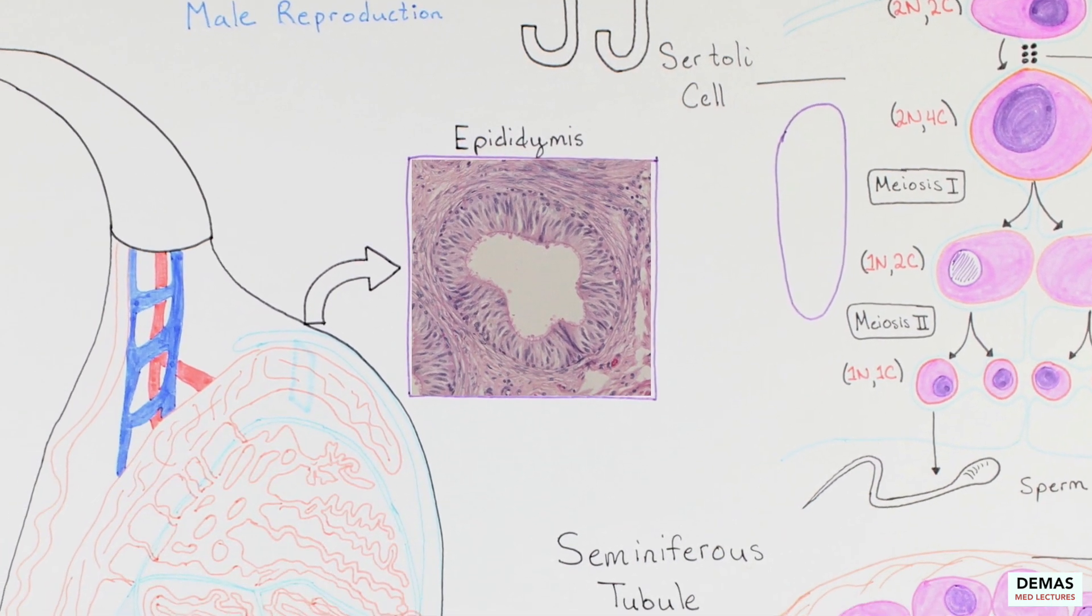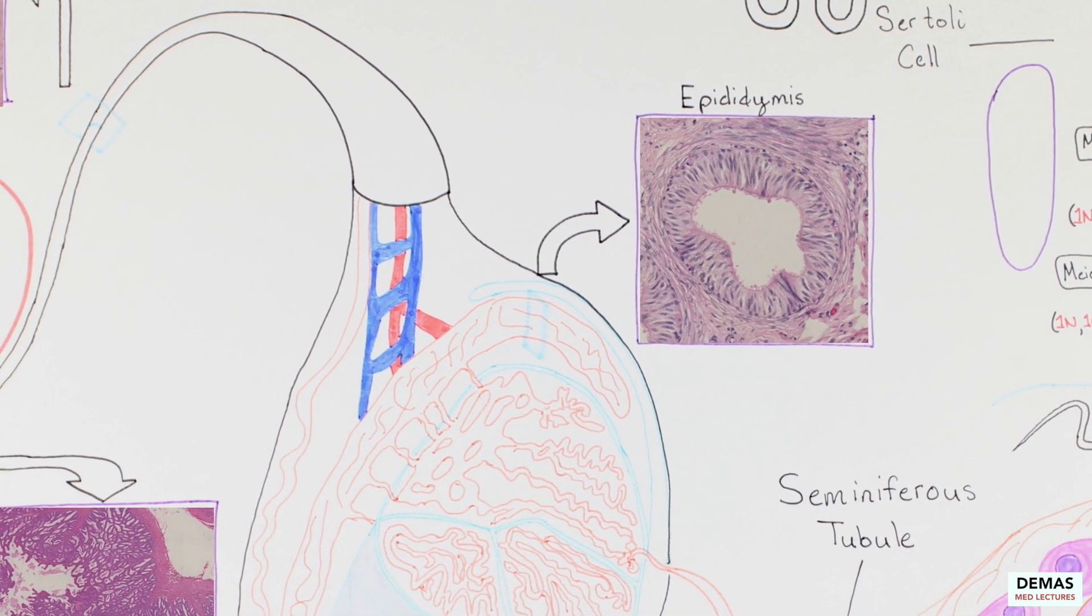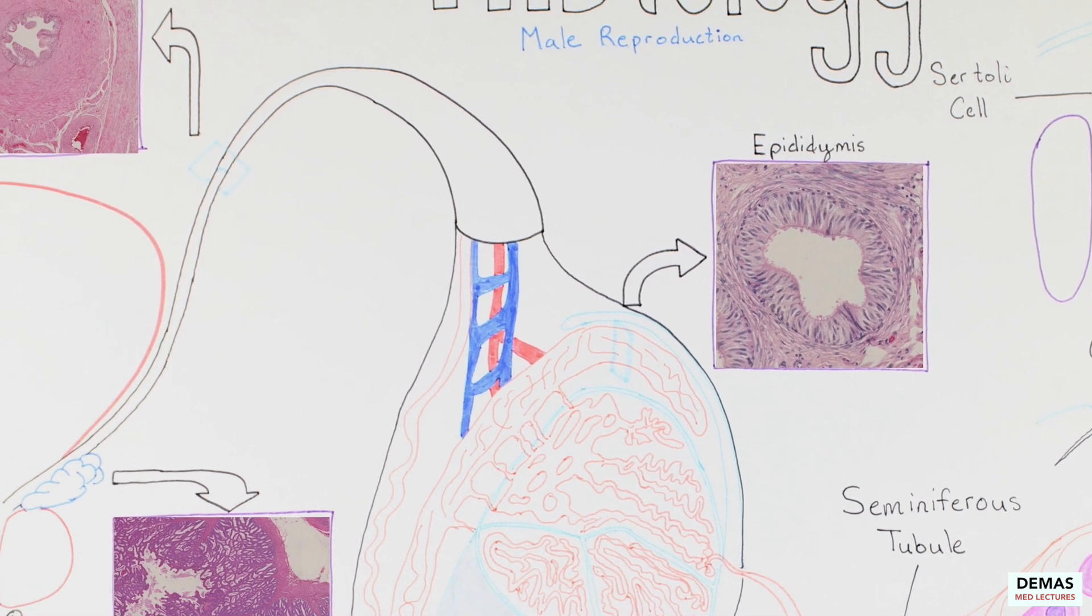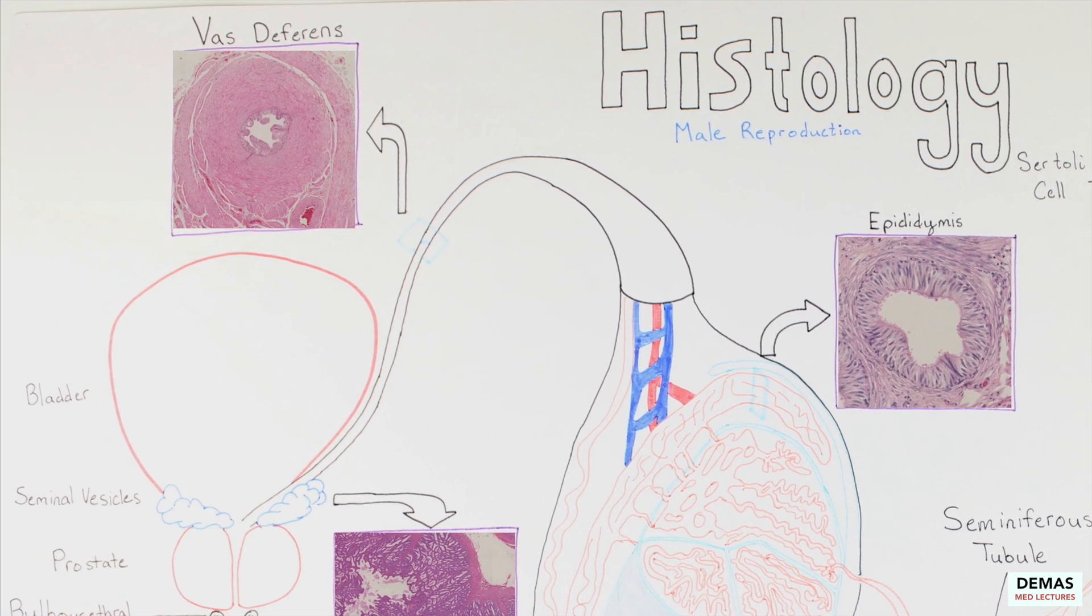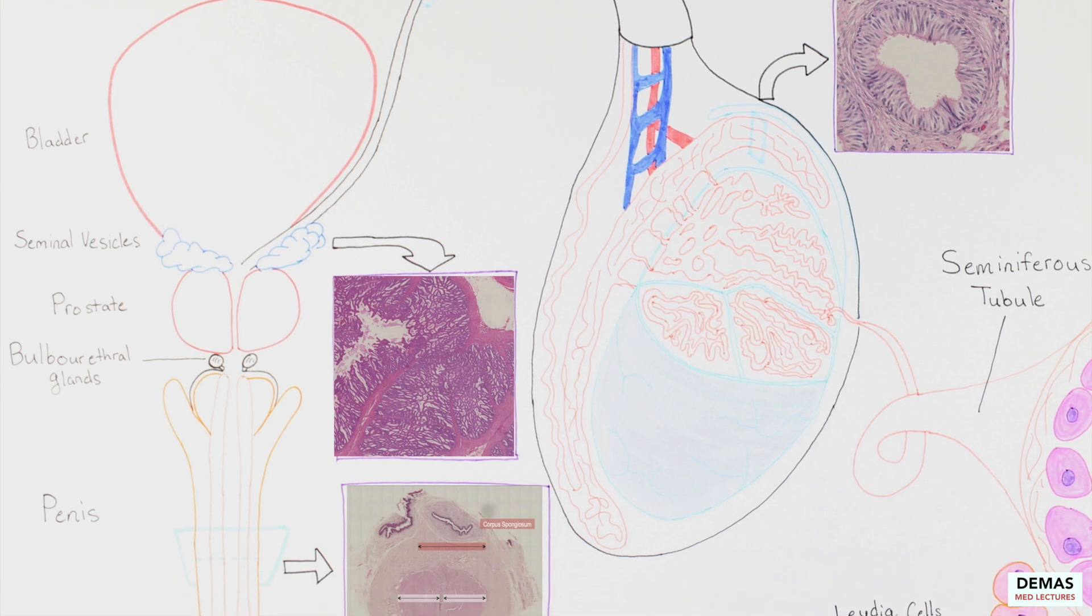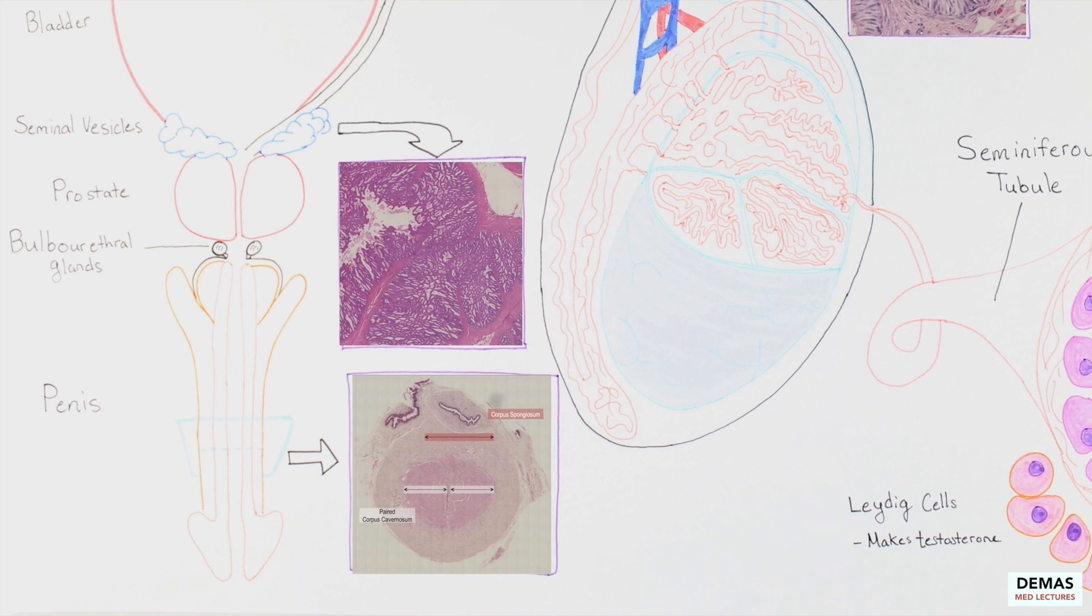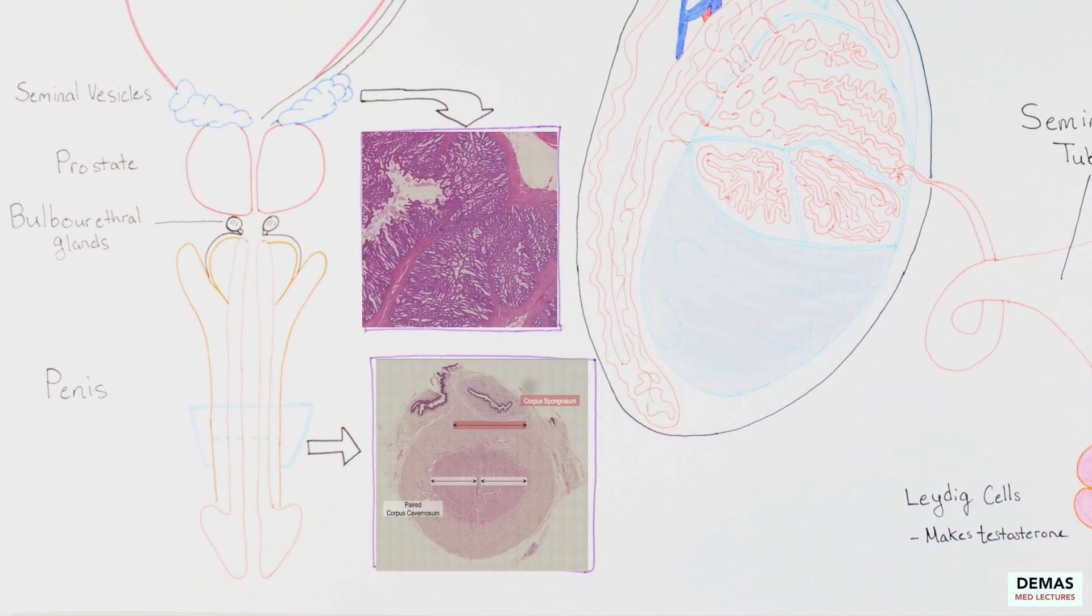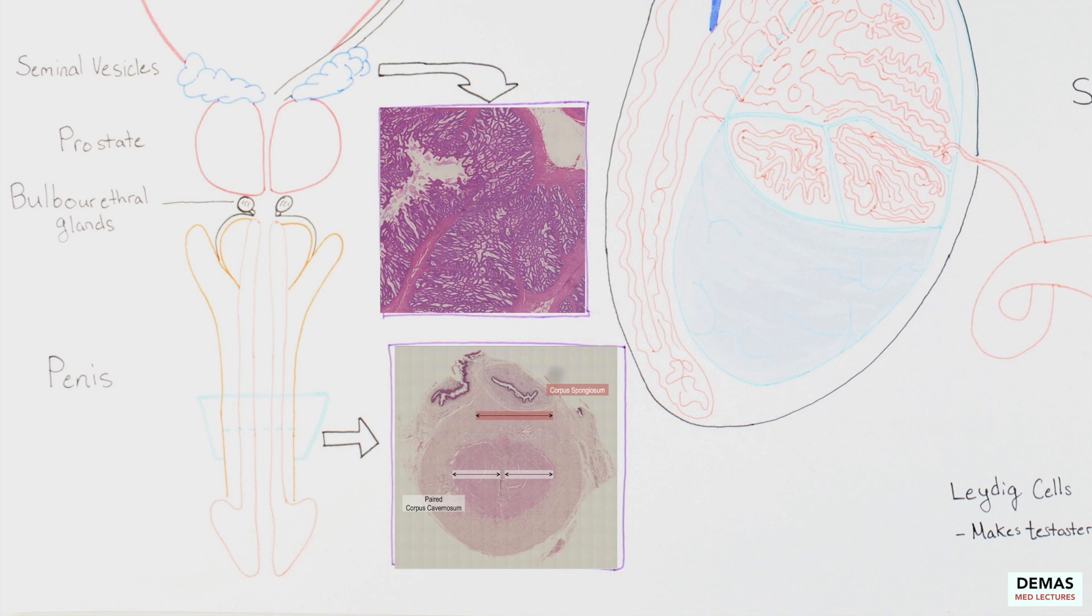The sperm are transported through the seminiferous tubules to the epididymis, where the sperm undergo final maturation and are temporarily stored. During ejaculation, the sperm are transported from the epididymis into the vas deferens, through the ejaculatory duct of the prostate, and finally through the penile urethra. During this transit, secretions are added from the seminal vesicles and prostate that comprise the semen, as well as lubricants from the bulbourethral glands that aid in transport outside the body.